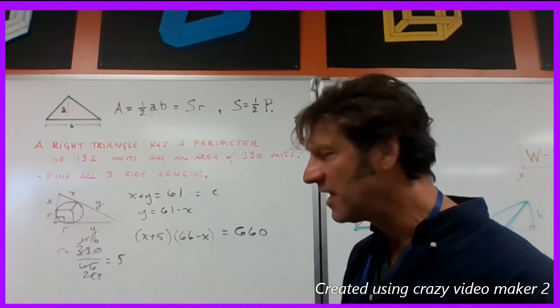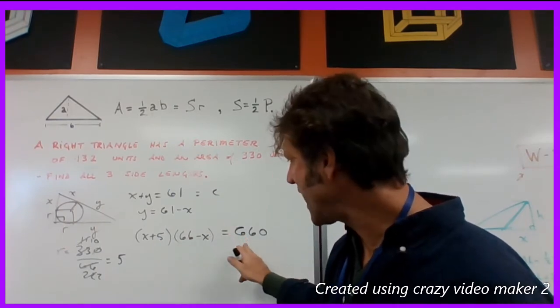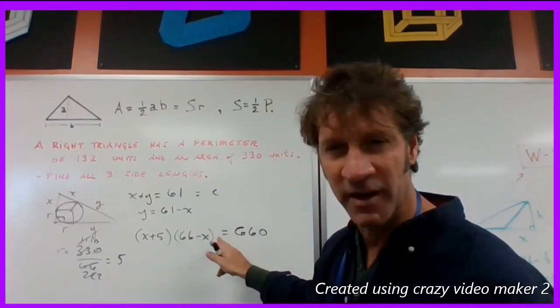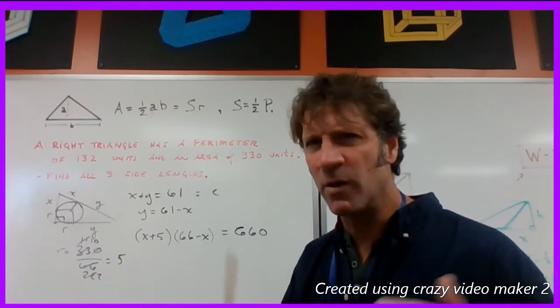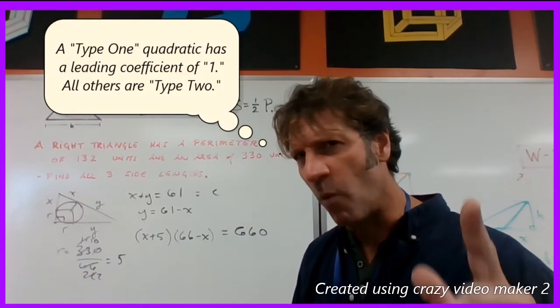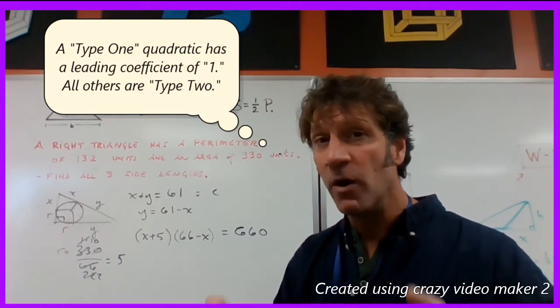So we're going to add up that 61 in there. And then we're going to have the positive 330. When we subtract this 660 from both sides you're going to get a negative 330. But that's going to be with the negative x squared. And I don't want to work with the type 2 quadratic. I want to work with the type 1 quadratic. So I'm going to multiply everything through by negative 1.